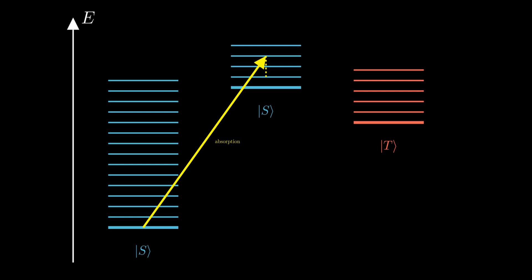If this process is not too fast, the molecule undergoes a spin state conversion from the singlet to the triplet state, in a process called inter-system crossing. Inter-system crossing is a spin-orbit coupling effect.